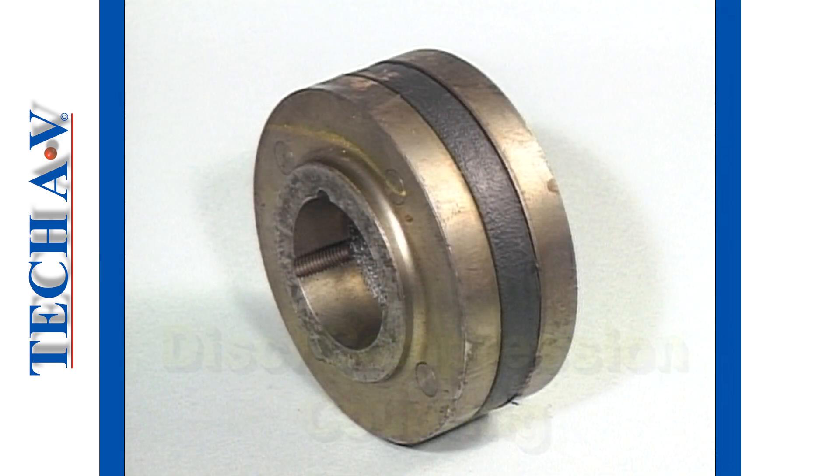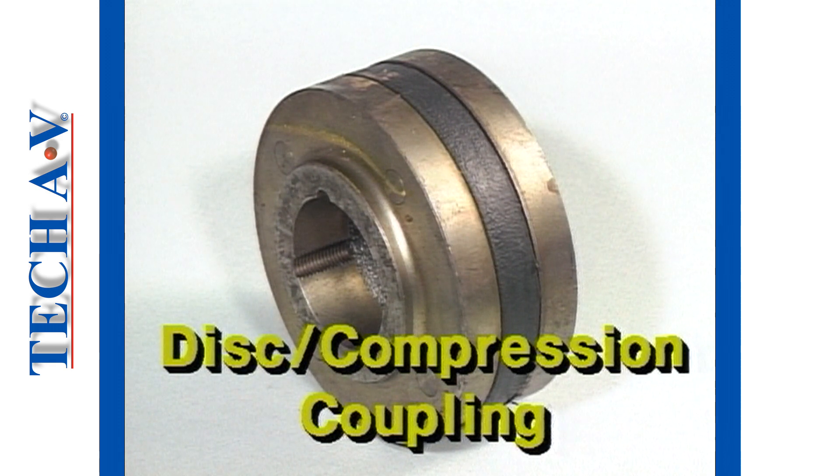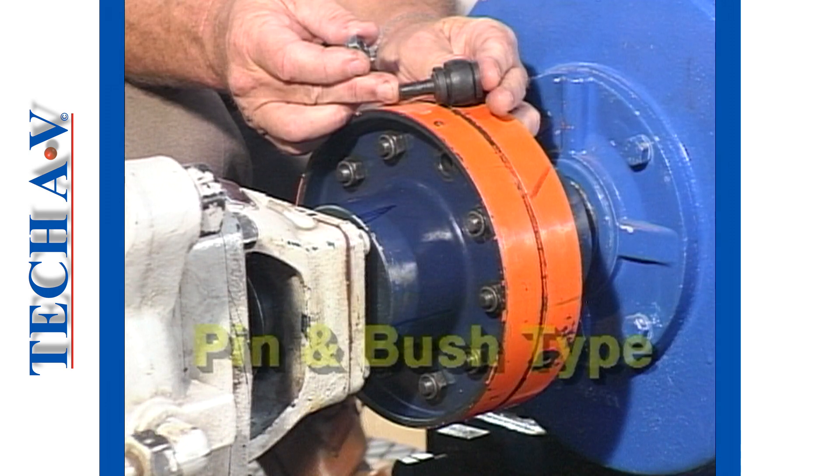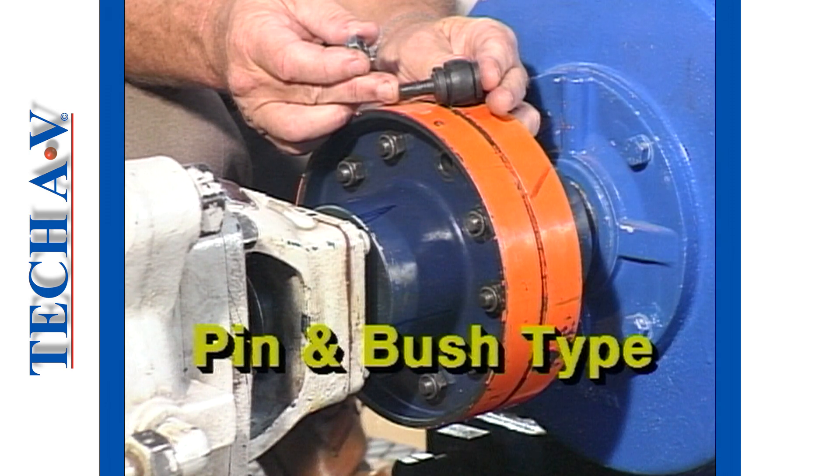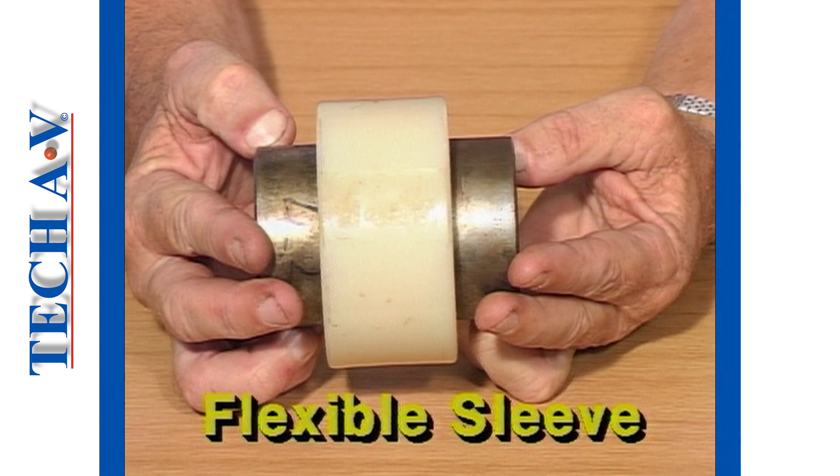Another popular elastomeric type is the rubber block or spider type coupling. Next, we see a rubber disc type coupling, sometimes called a compression coupling. Here, we see a pin and bush type coupling. Another popular type, and the last we shall show, is the flexible sleeve coupling.